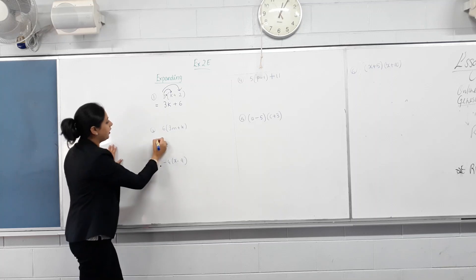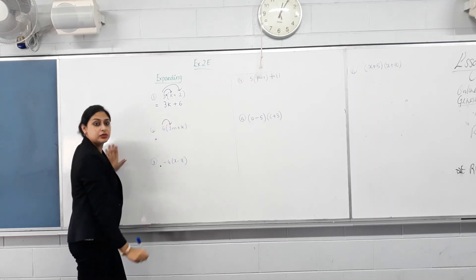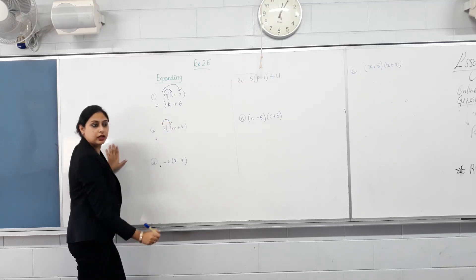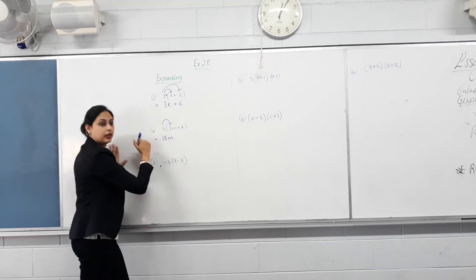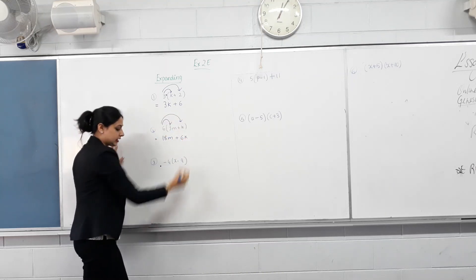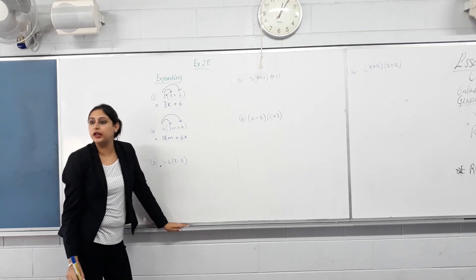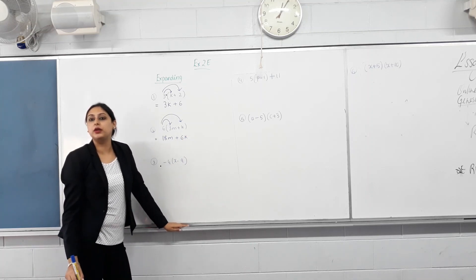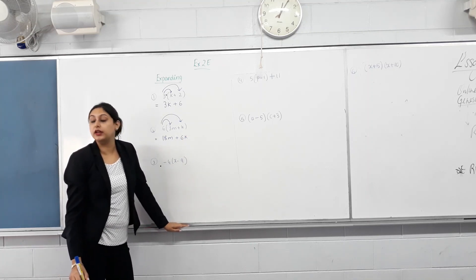No, these ones are easy. Now, six times three? Eighteen. Eighteen what? M. Plus K? No, not plus K. Six K. So everything outside the bracket gets multiplied with everything inside the bracket.